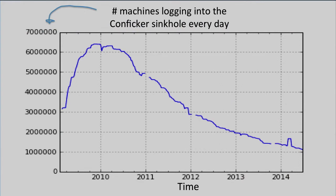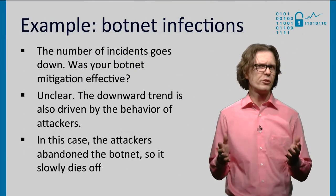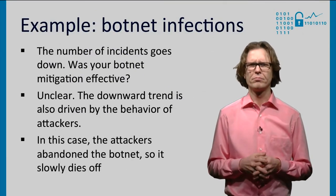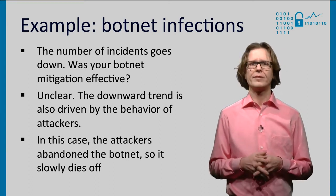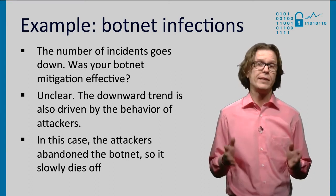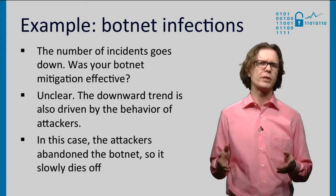If you would use data this way, you would see something like this. This is real data. On the vertical axis, you see the number of infected machines that show up in the sinkhole every day; the horizontal axis is time. And over time, you see a clear downward trend. So was your mitigation policy effective? It's unclear — the downward trend could also be caused by attacker behavior. And indeed, that's what happened here: the criminals abandoned the botnet, so it is slowly dying off.